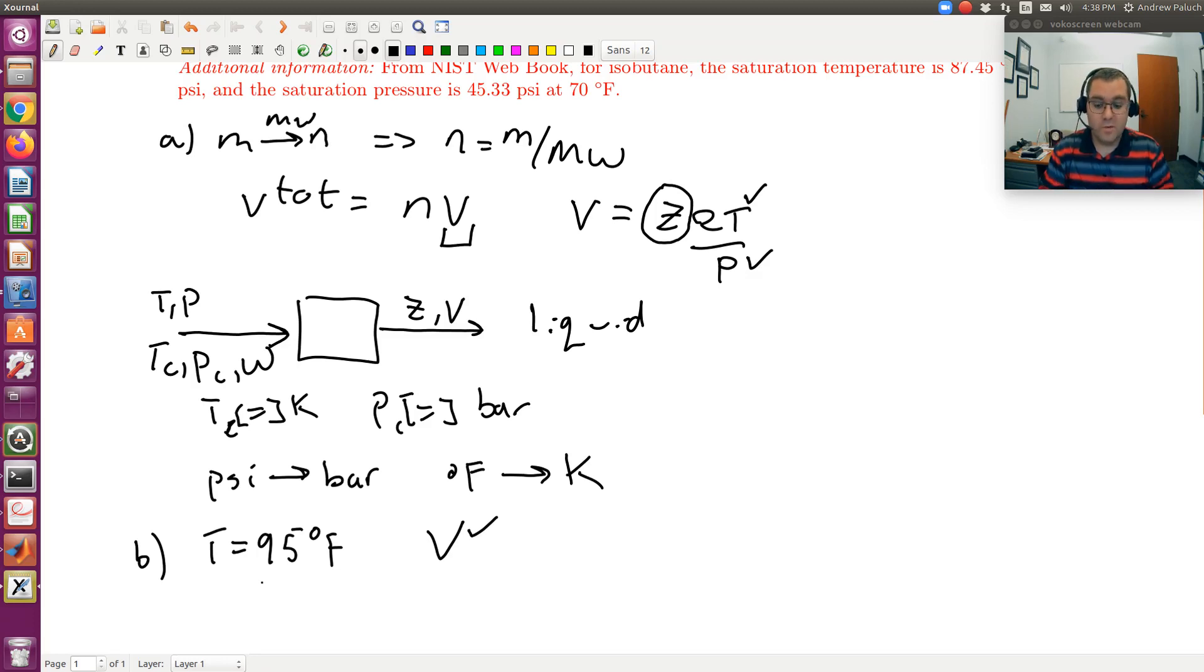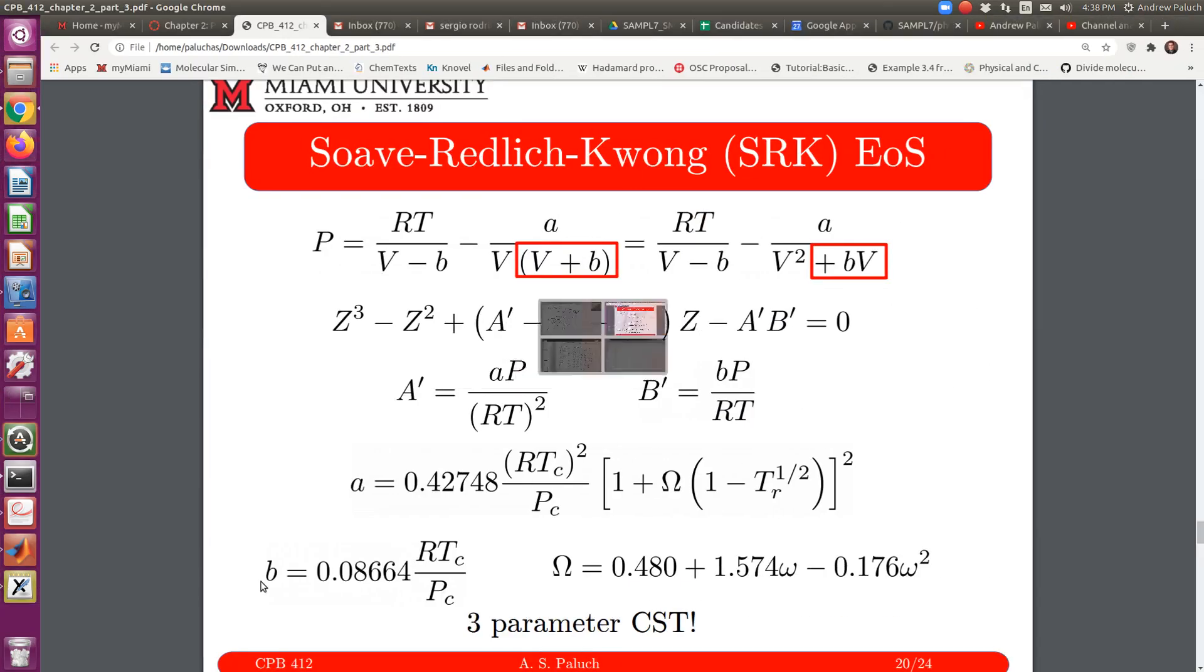The other way would be, I'm going to flip over. I opened up our notes. This is our third set of notes posted online. And actually, in this case, since volume is known, I could go to our SRK expression, which is explicit in P. And so I know RT, I know V, and so I would just need to calculate little a and little b.